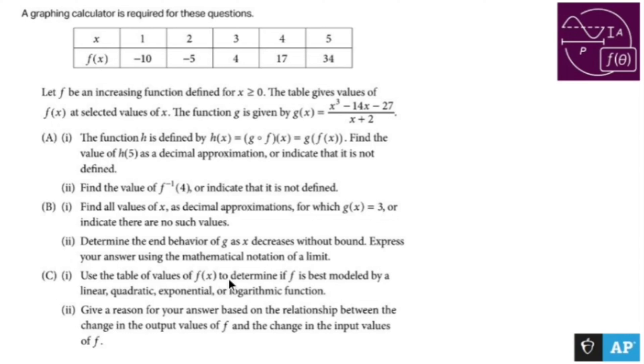Use the table of values of f to determine if f is best modeled by a linear, quadratic, exponential, or log function. So the top goes up by one. Let's see what happens here. So I go from -10 to -5 is you add 5. -5 to 4 is 9. So it's not linear. 4 to 17 is 13, and 17 to 34 is 17. So it's not linear because when I do the rate of change, the rate of change is different every time. Let's see if it's quadratic.